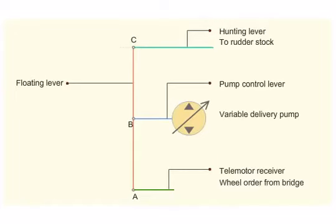The telemotor receiver moves the floating lever to A1 or A2 port or starboard according to the wheel order. When the floating lever is moved from A to A1, the pump control rod is moved from B to B1.